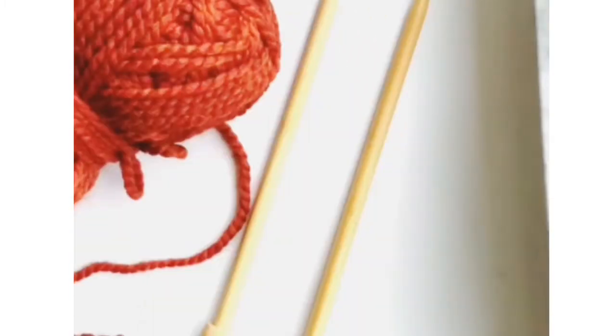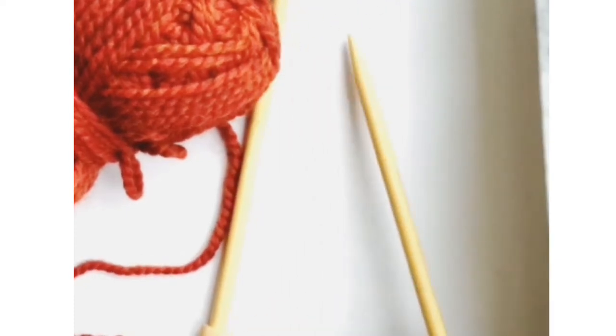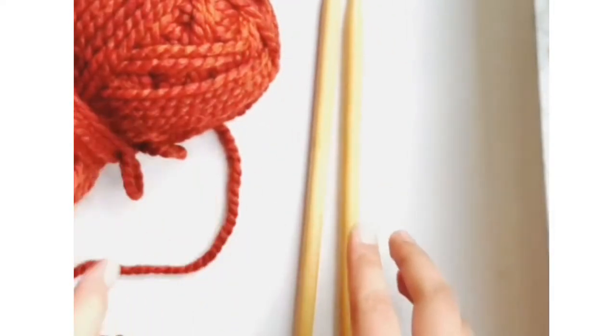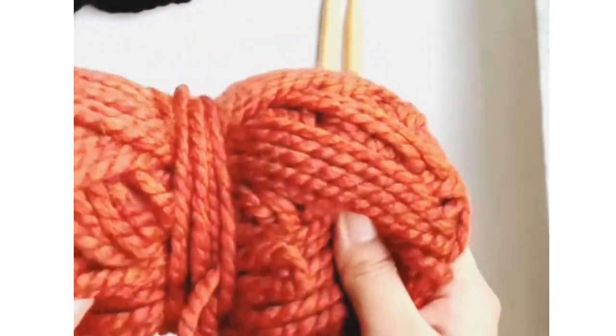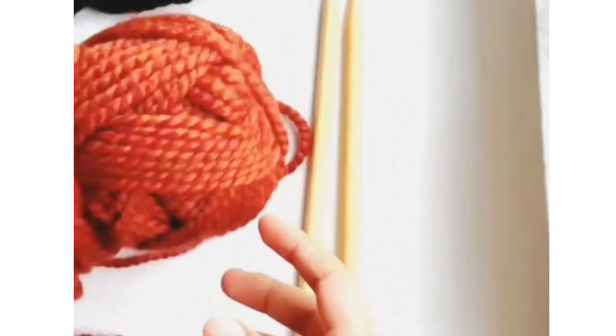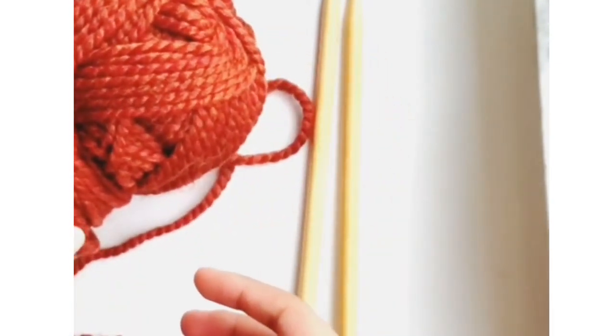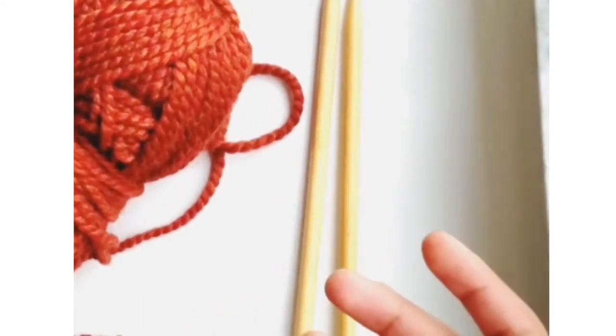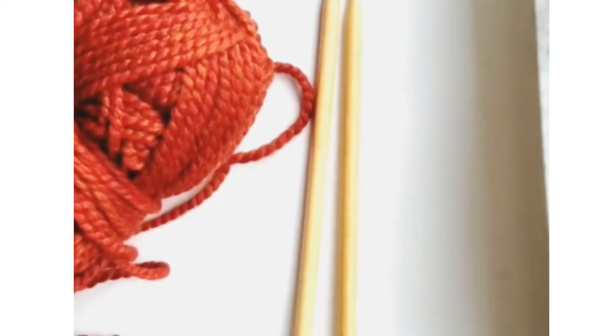So today I'm actually going to be using US 13 9mm needles. I'm using the Clover brand, they're bamboo needles, and I'm using Lion Brand Hometown Thick and Quick in Spice. And this is a size 6 chunky weight yarn. It's easier to learn with larger needles and thicker yarn when you're starting off. So that's what I'd use today.